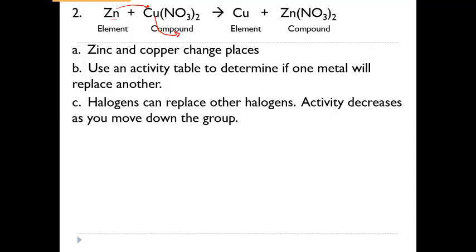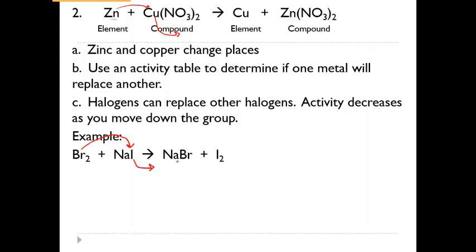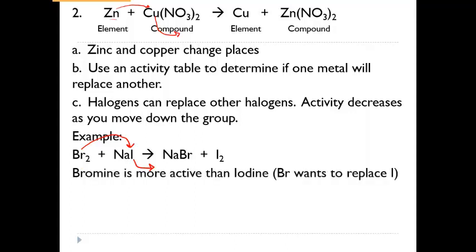Halogens work the same way — halogens can replace other halogens, and their activity decreases as you go down the table. The halogens in that chart go in order on the periodic table: fluorine at the top and iodine at the bottom. In this example, bromine is a non-metal, so it's going to want to replace another non-metal. We would have sodium with bromine, and then iodine on its own. Looking at the activity chart, bromine is right above iodine, so bromine is more active. Because it's more active, bromine does want to replace the iodine — it will pair with the sodium, and iodine will be by itself.